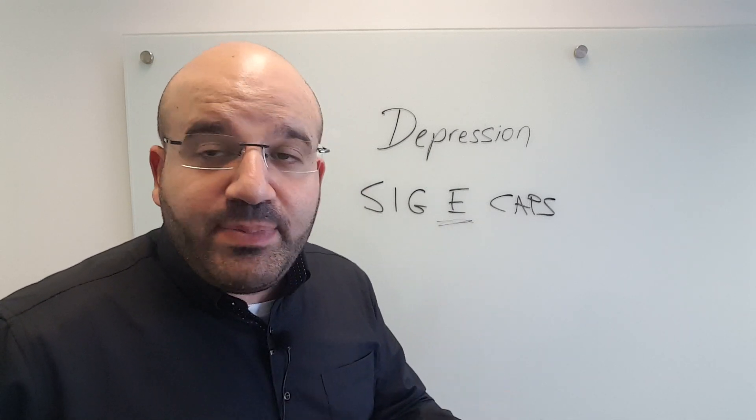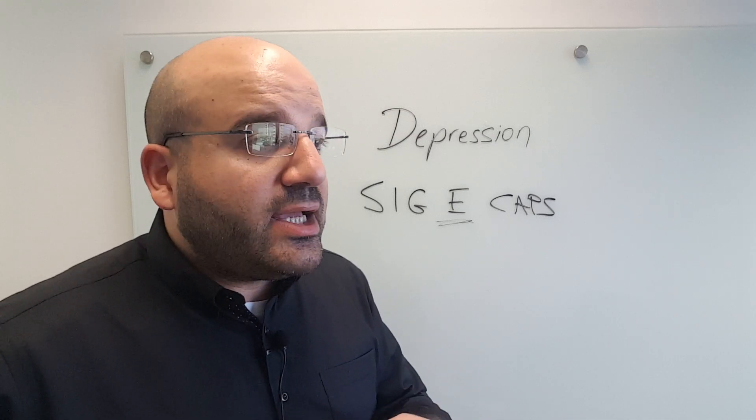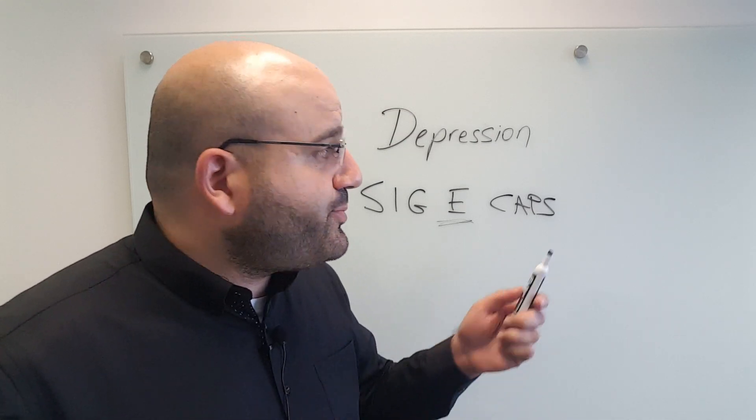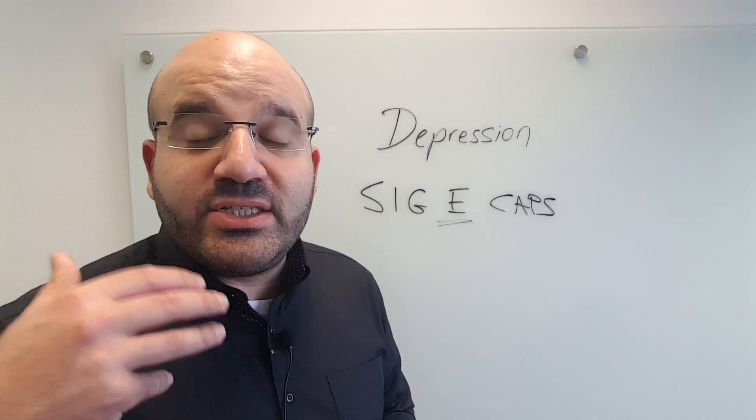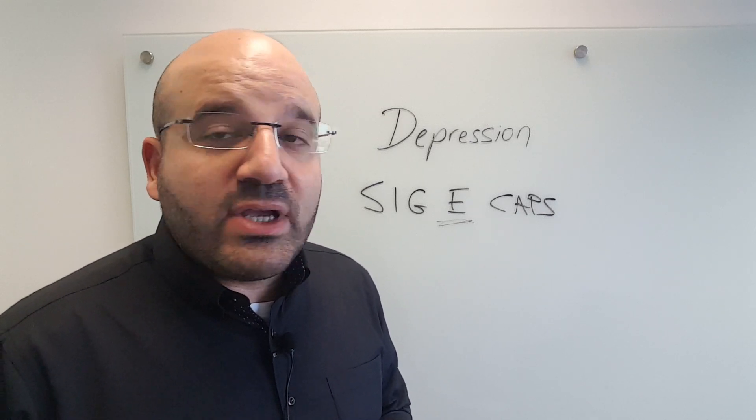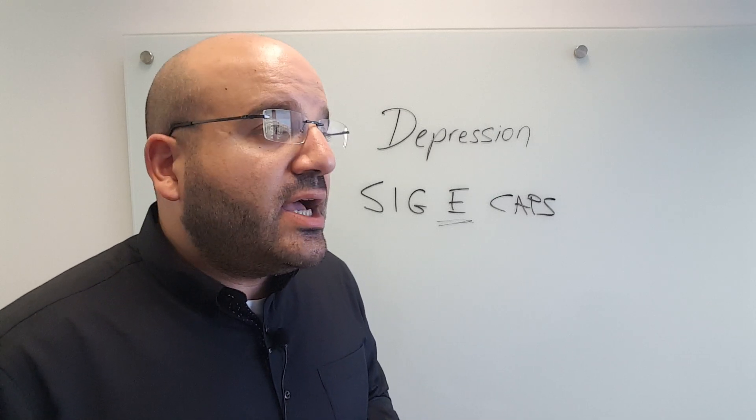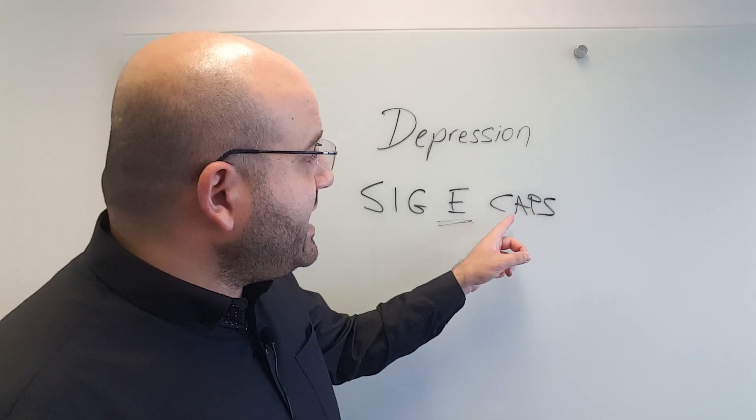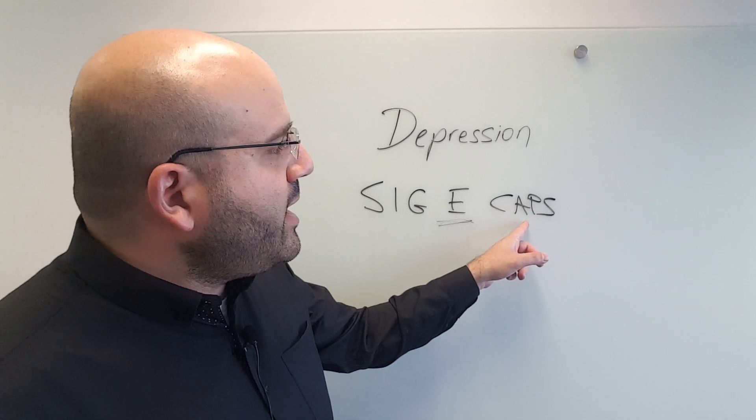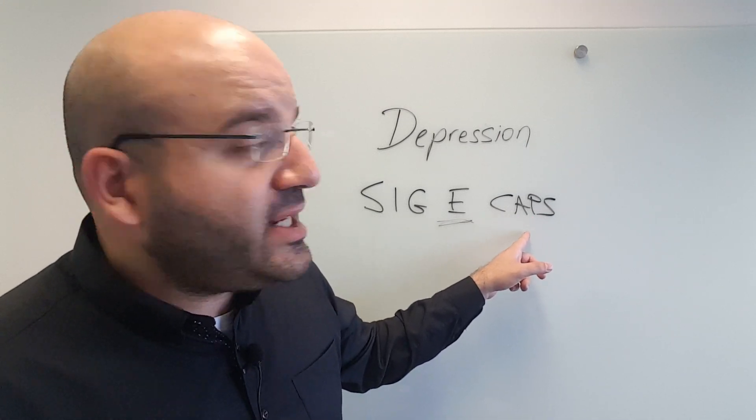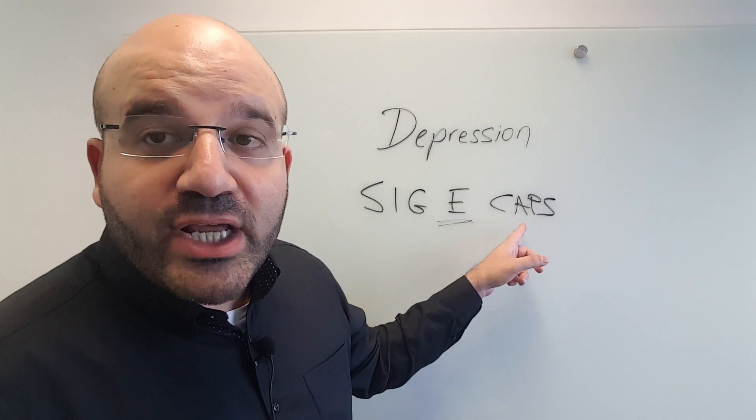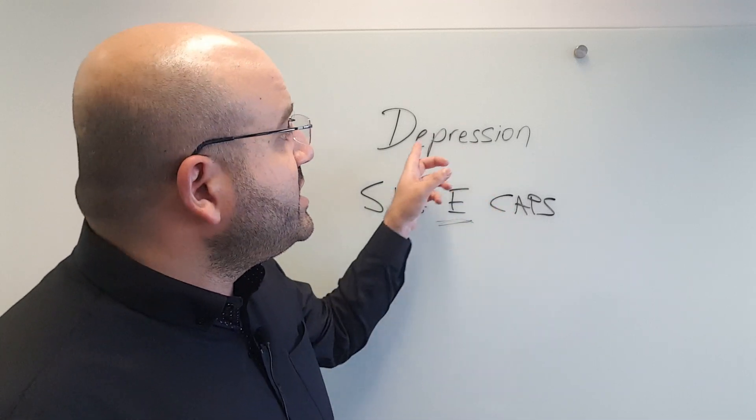A stands for appetite. Typically there's a reduction in appetite. You can still be depressed and have increased appetite, especially in atypical depression where there's an increased desire for carbohydrates and sweets, especially nighttime binging. But generally we more typically find a reduction in appetite and significant reduction in weight.